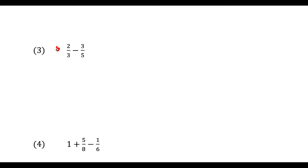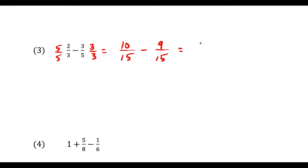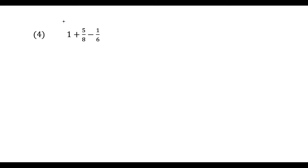For the next question we're subtracting. Multiply by 5/5 and then 3/3 so they have matching denominators. Now we have 10/15 minus 9/15. This works out to 10 minus 9, which is 1, over 15 — the denominator stays the same because we're subtracting.